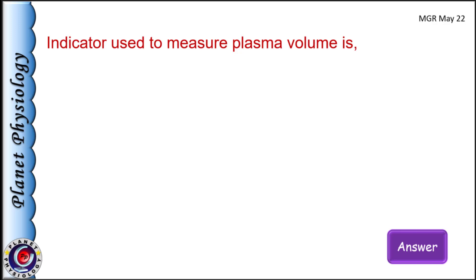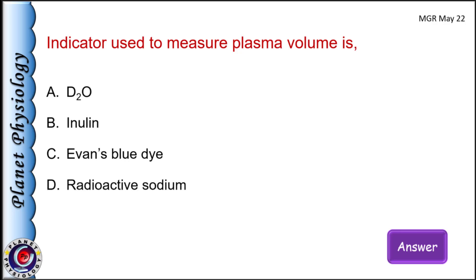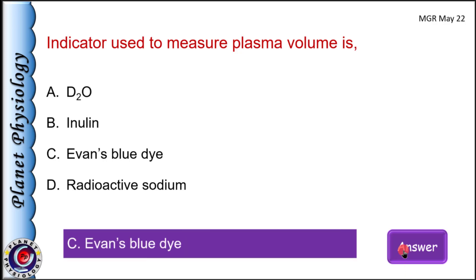Indicator used to measure plasma volume is: a) D2O (deuterium oxide), b) inulin, c) Evans blue dye, and d) radioactive sodium. Correct answer is C: Evans blue dye, also known as T-1824. As it binds with albumin, the dye is confined to the vascular compartment only. D2O is heavy water and measures total body water. Inulin and radioactive sodium both measure extracellular fluid volume, as they equilibrate in plasma and interstitial fluid but do not enter the cell.